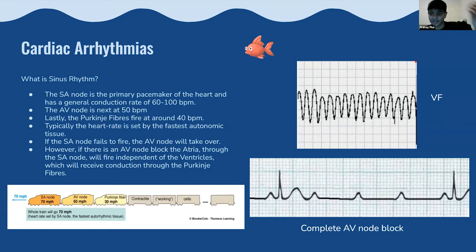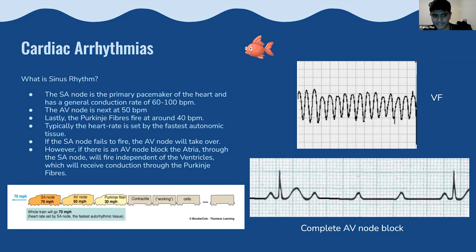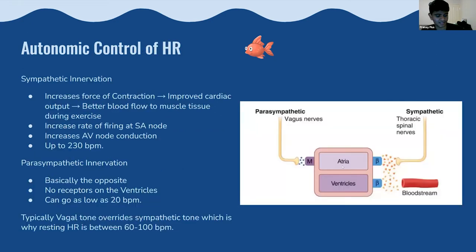Ventricular fibrillation just appears as a bunch of squiggles on the ECG — it's very bad and needs urgent treatment, and will be covered in the clinical skills ECG lecture. Complete AV node block is more important for understanding the physiology of how sinus rhythm works.